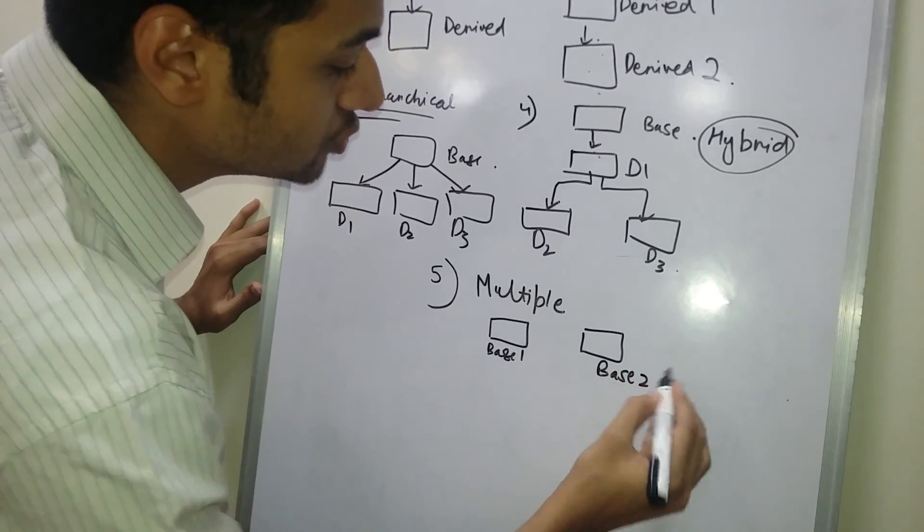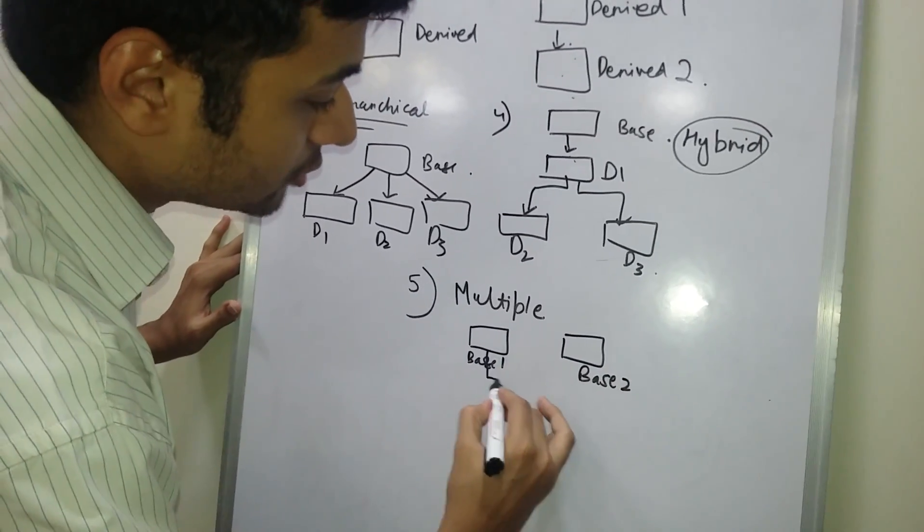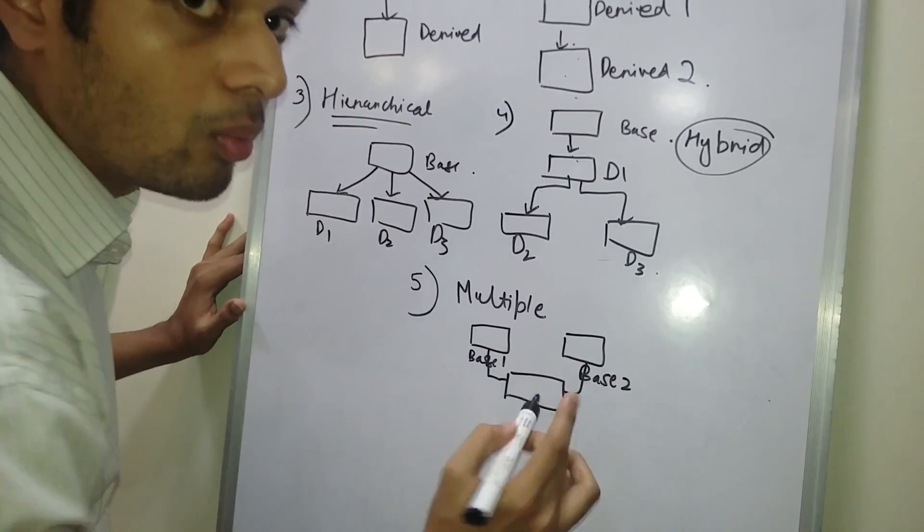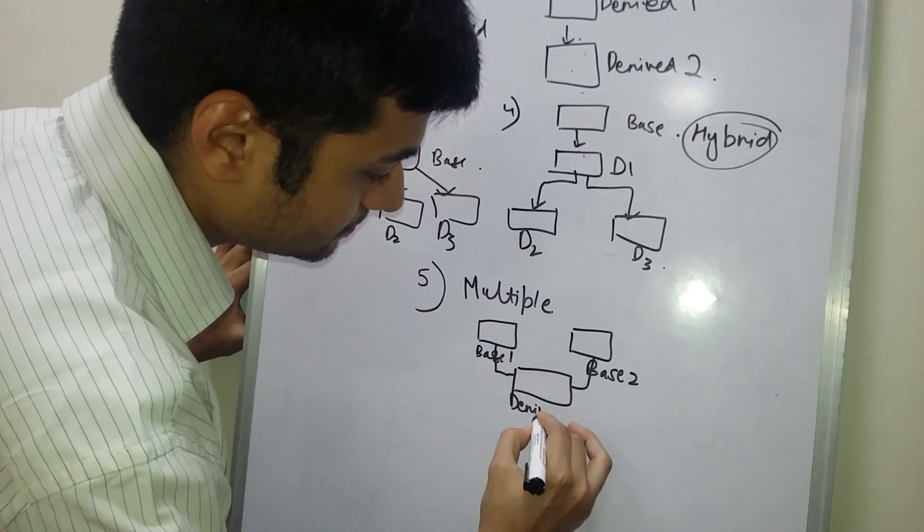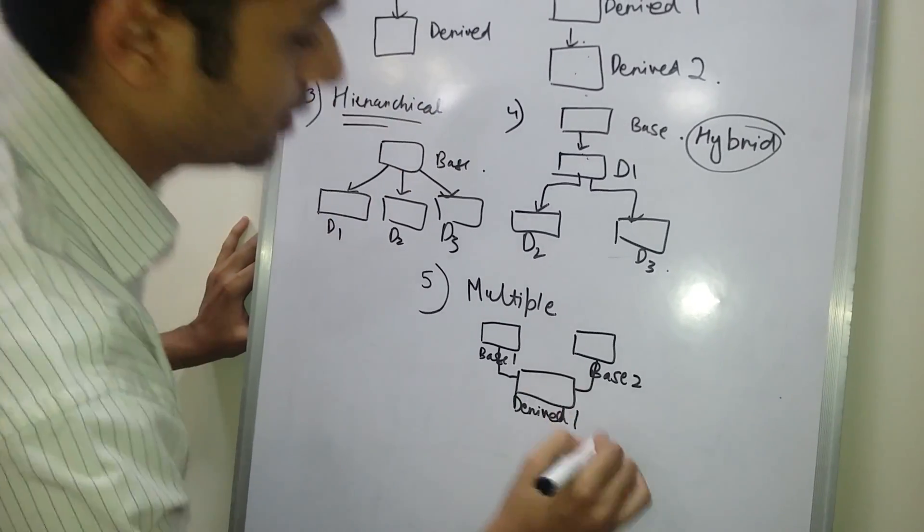Base one and base two, all together, they combine together to form one single derived class, derived one.